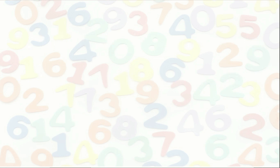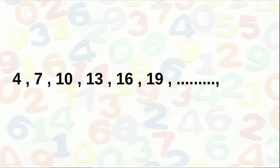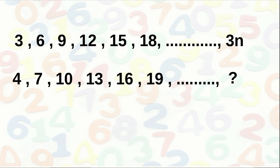Next, consider the sequence 4, 7, 10, 13, 16, 19, etc. It starts with 4 and proceeds with the addition of 3 repeatedly. To find the nth term, we consider the sequence of multiples of 3: 3, 6, 9, 12, etc., whose nth term is 3n. Comparing the terms, the terms of 4, 7, 10, 13, etc. are got by adding 1 to the terms of the multiples of 3. Therefore the nth term is 3n + 1.